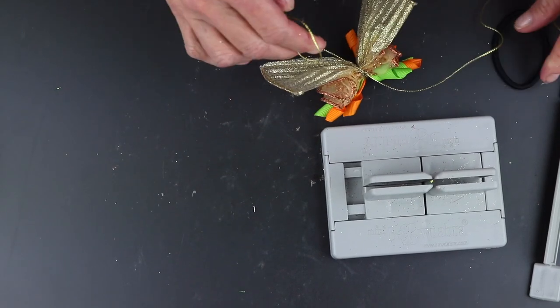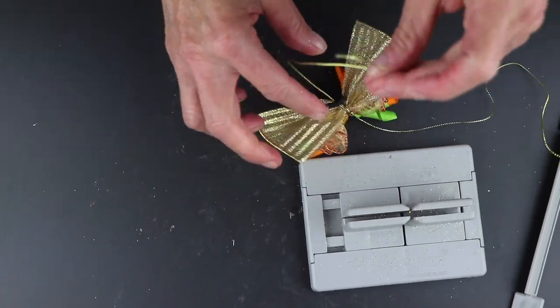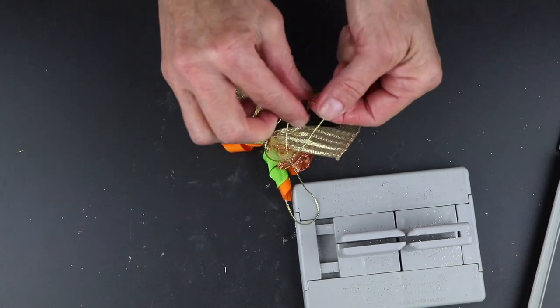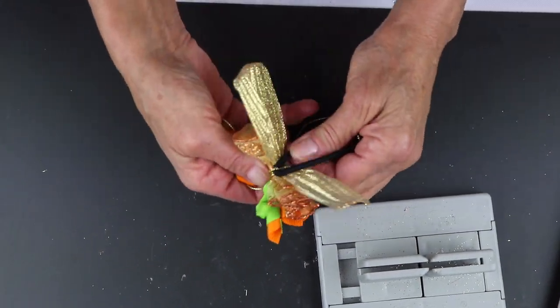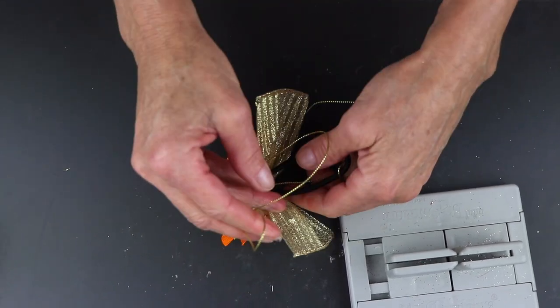And then I'm going to take my ponytail holder and just tie it on. I'm just going to knot this and bring that around to the back and double knot it.